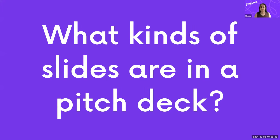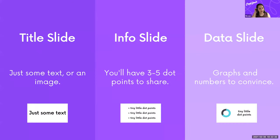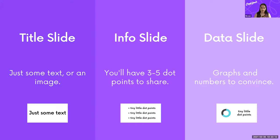What kinds of slides are actually in a pitch deck? I've broken it down into roughly three types. First, a title slide — some text or a bold image, like an introductory slide making a bold statement. Second, an info slide — three to five dot points of short sentences. Third, a data slide — graphs and numbers. A great tip: make sure you have a little bit of text so viewers know what the graphs mean.